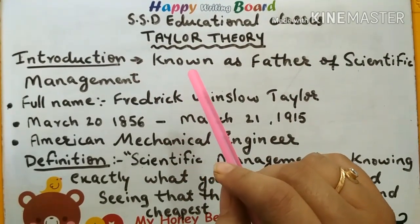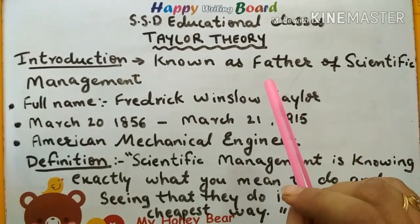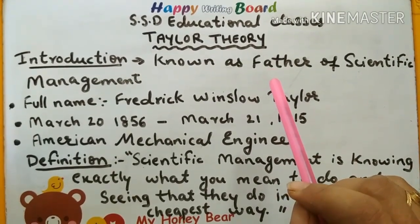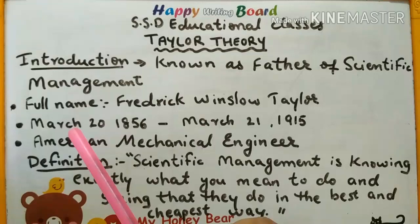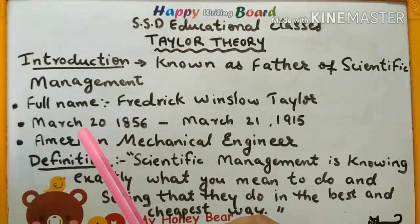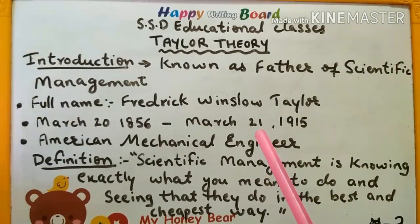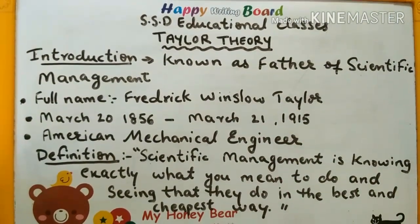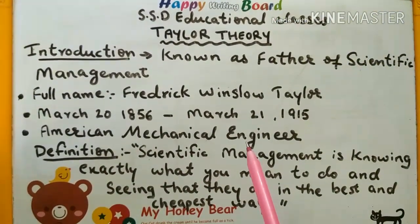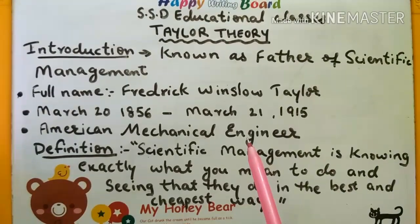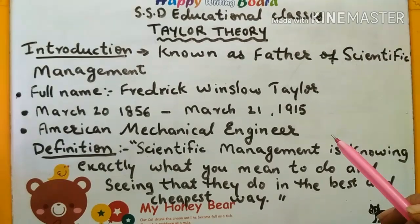Let's see the introduction. Taylor is known as the father of scientific management. Taylor's full name is Frederick Winslow Taylor. He was born on 20th March 1856 and died on 21st March 1915. He worked as an American mechanical engineer for many years, and from his practical experiments, he made some theories.